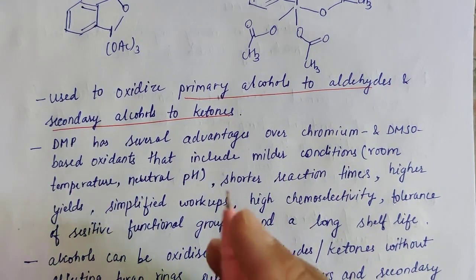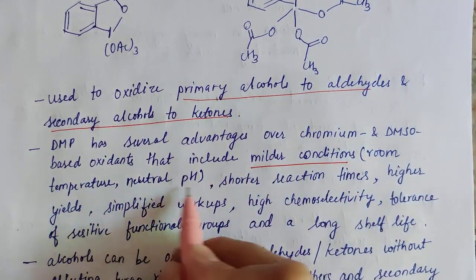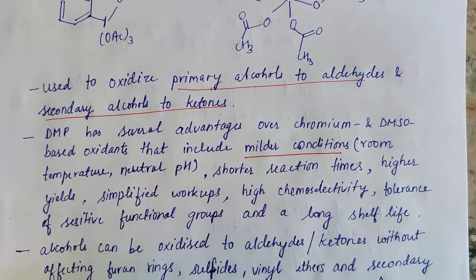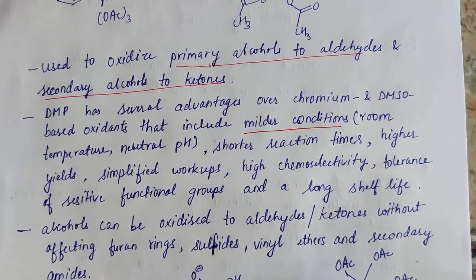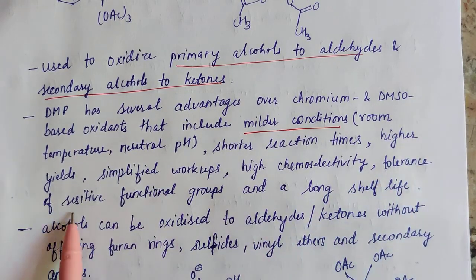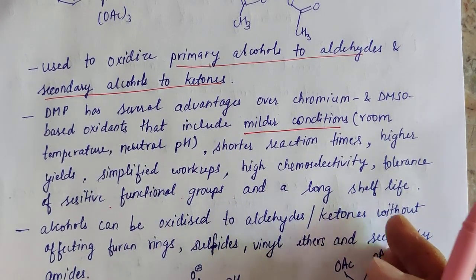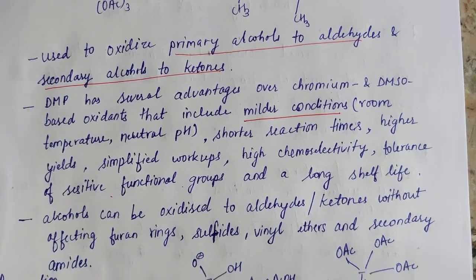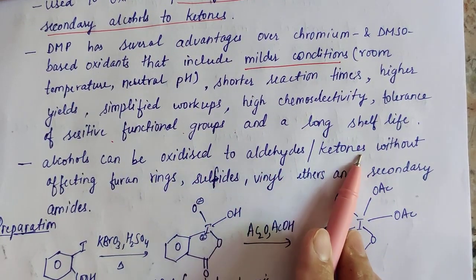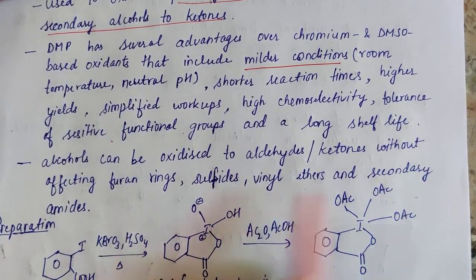Comparing DMP with other chromium-based or DMSO-based oxidants, it has many advantages: the reaction can occur at milder conditions, room temperature, neutral pH, short time period, high yield, simple reaction, high chemoselectivity, and most importantly tolerance of sensitive functional groups and a long shelf life — meaning we can store it for a very long time.